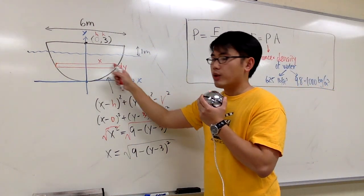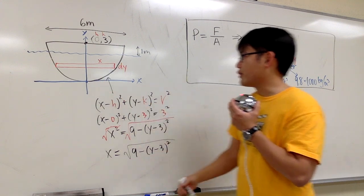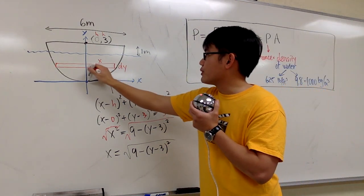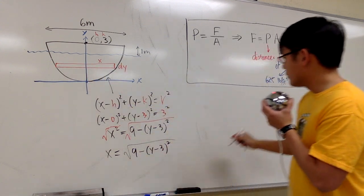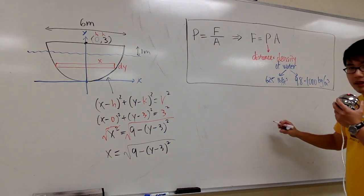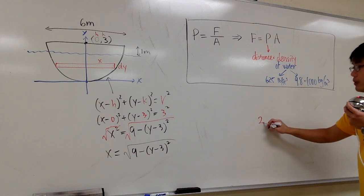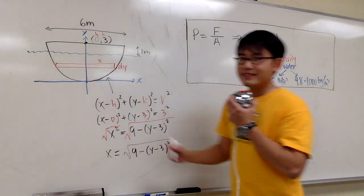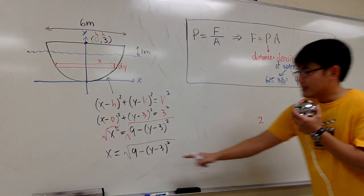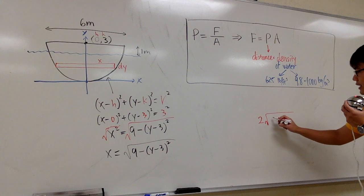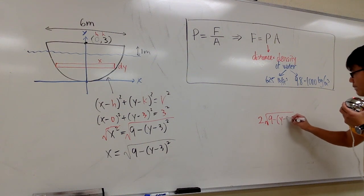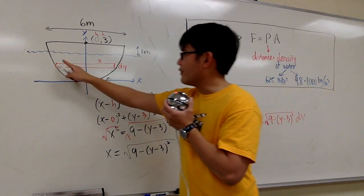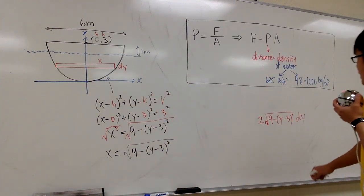All right. So let's write an equation for the area of the rectangle now. We need to have x times dy, but that will give us this portion only. We need to multiply by 2. So let me just write it down here. So let me put down 2. So technically it's 2x. So that's the 2. So altogether it's 2x. x is this. I'll put this down. Square root, 9 minus parentheses y minus 3 square, and then dy. That will give us the area of this rectangle right here.